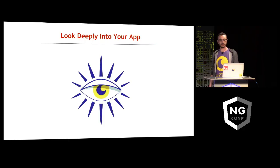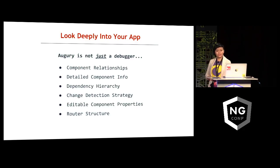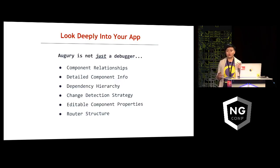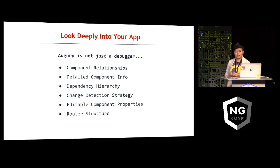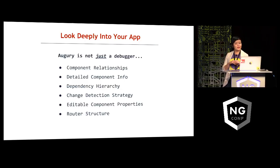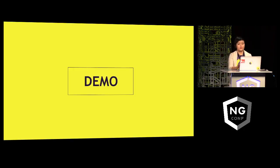Augury is not just a debugger. The demand for complex Angular applications is growing every day, and as the app gets more and more complex, there are layers and layers of abstraction. It's really hard to keep everything in your head. Augury aims to make your life a little bit better by giving you insights into the dynamic behavior of your application so you can understand what's really going on under the hood. It does so by giving you a graphic representation of component relationships, dependency hierarchy, and router structure. By understanding how all these elements tie together, you as a developer will be able to build better and more optimized applications. I think we're ready for a demo.